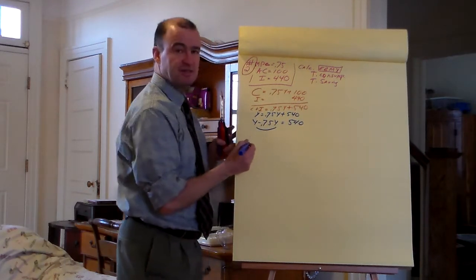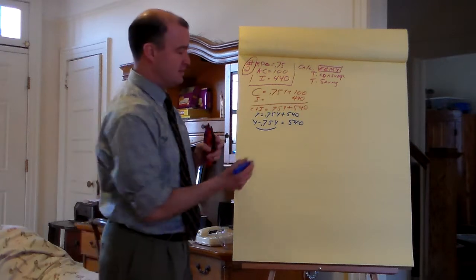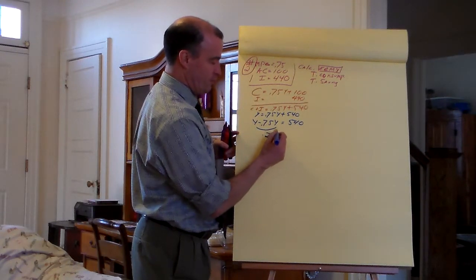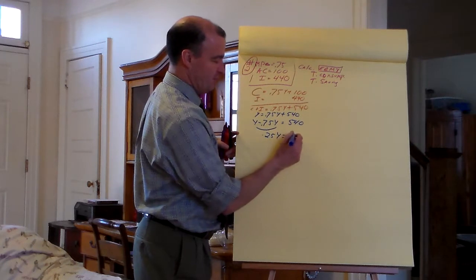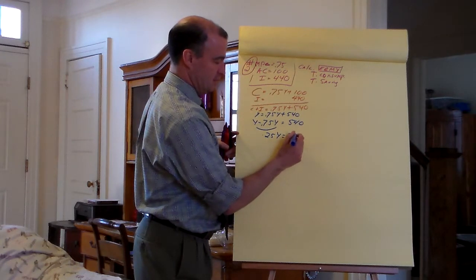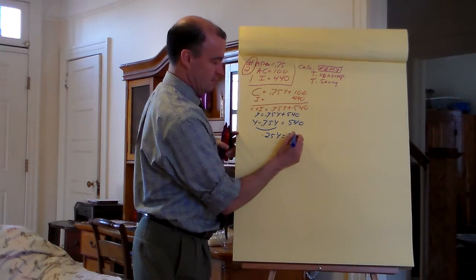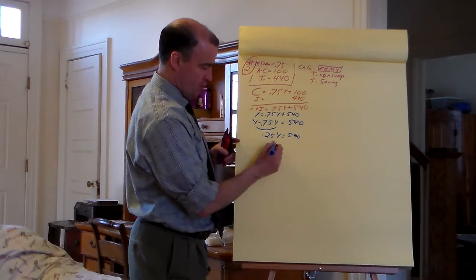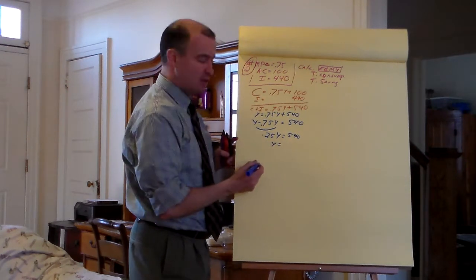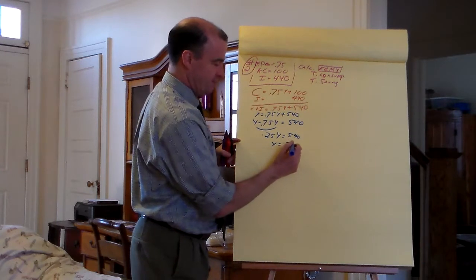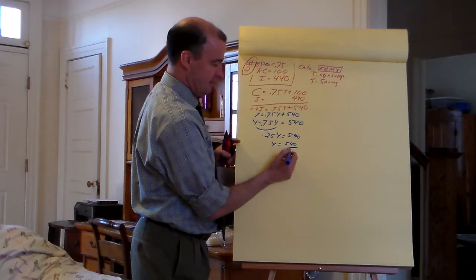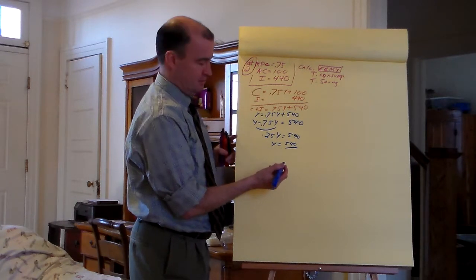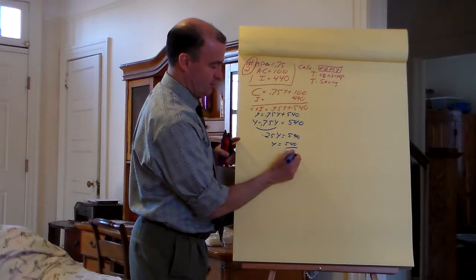How much Y is in this? I have a whole dollar, take away 75 cents — I'm left with 0.25. One fourth of the income is 540. To get Y all by its lonesome: 540 divided by 0.25, which is one fourth.